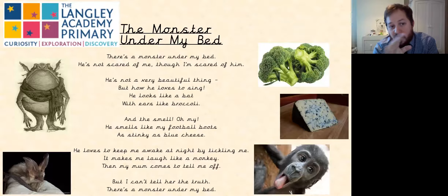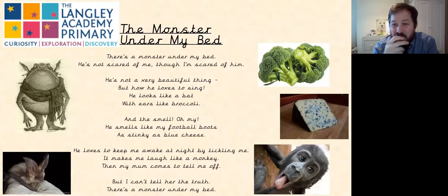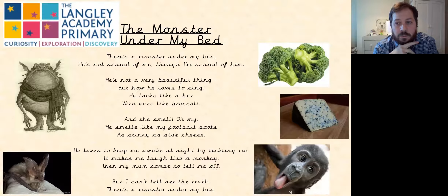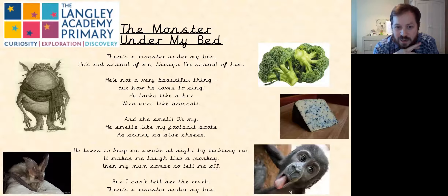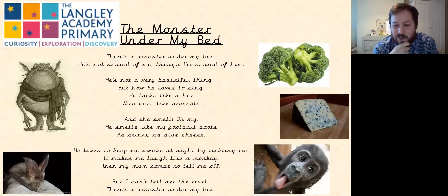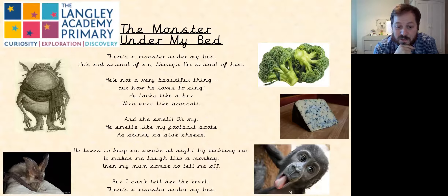Now we're going to have a look at a poem called 'The Monster Under My Bed' and look at the similes in it. There's a monster under my bed. He's not scared of me, though I'm scared of him. He's not a very beautiful thing, but how he loves to sing. He looks like a bat with ears like broccoli. And the smell — oh my, it smells like my football boots, the stinkiest blue cheese. He loves to keep me awake at night by tickling me. It makes me laugh like a monkey. And then my mum comes and tells me off, but I can't tell her the truth. There's a monster under my bed.